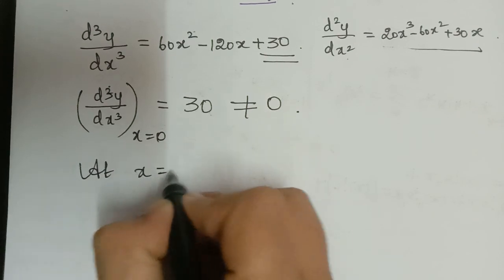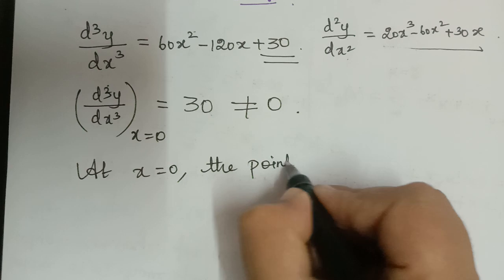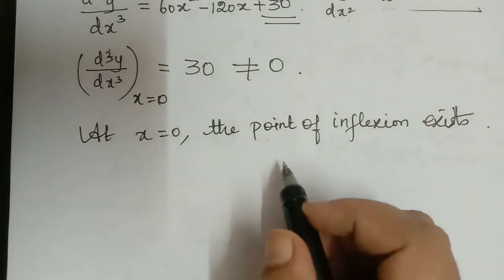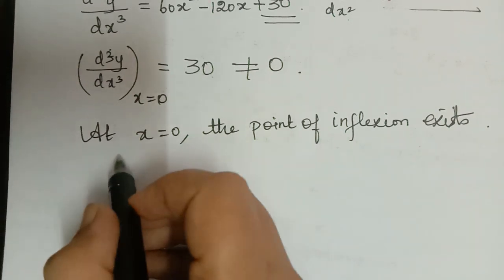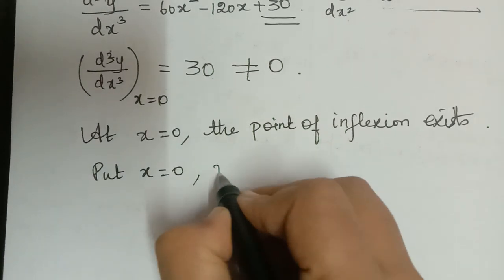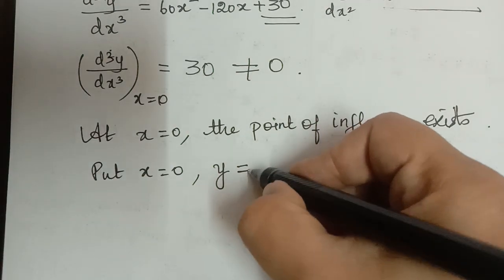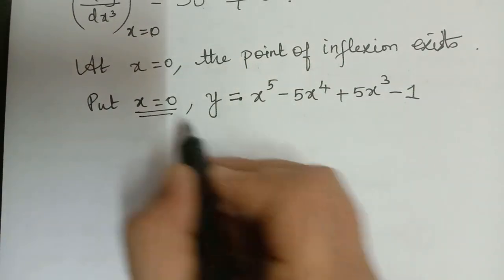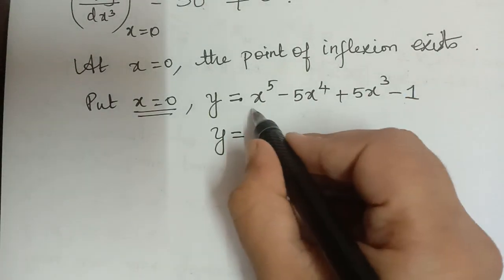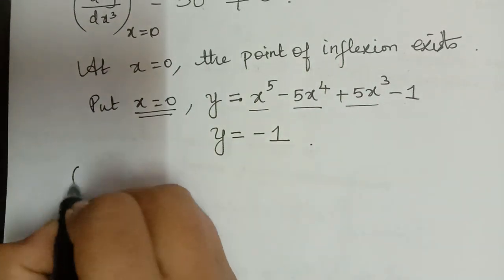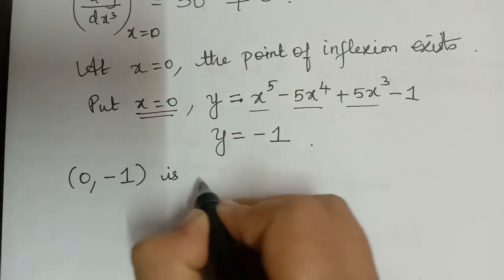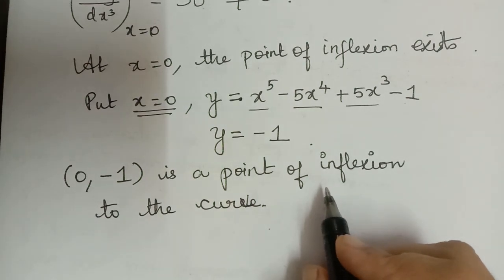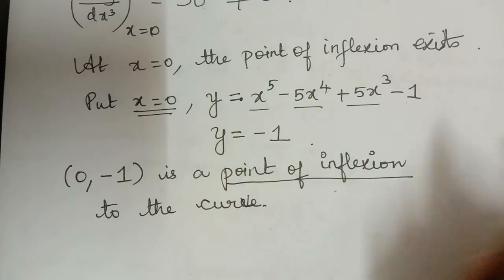Since the point of inflection exists at x = 0, we find its coordinates by substituting x = 0 into y = x⁵ - 5x⁴ + 5x³ - 1. All terms with x vanish and we get y = -1. Therefore the point (0, -1) is a point of inflection on the given curve. Hope you have understood the concept of maximum and minimum values for a given function and the point of inflection. Thank you.